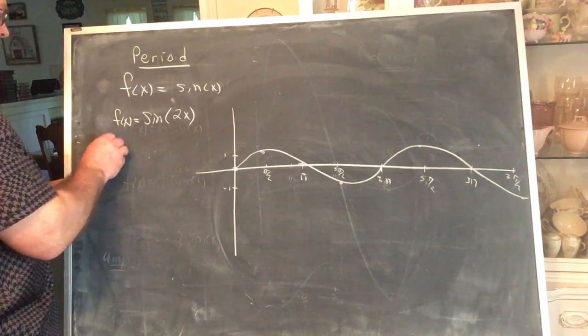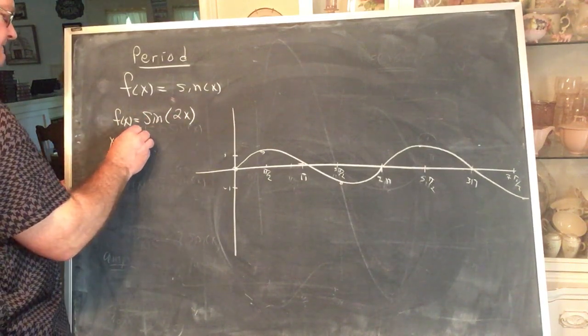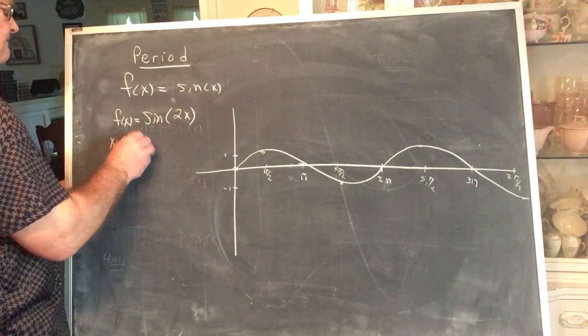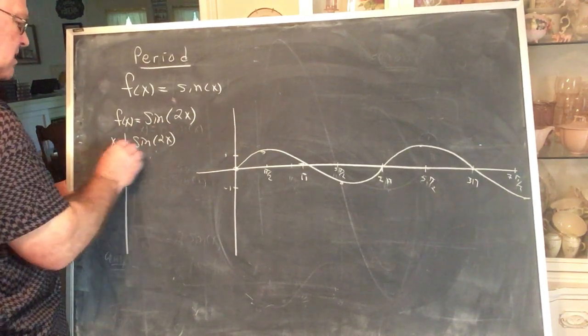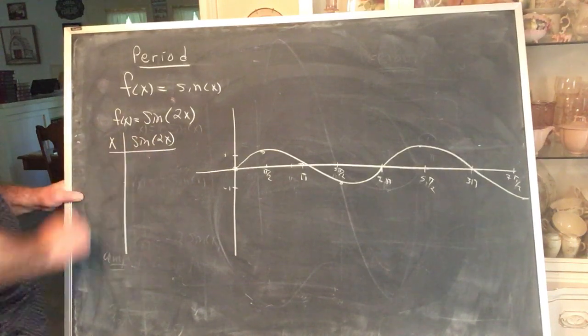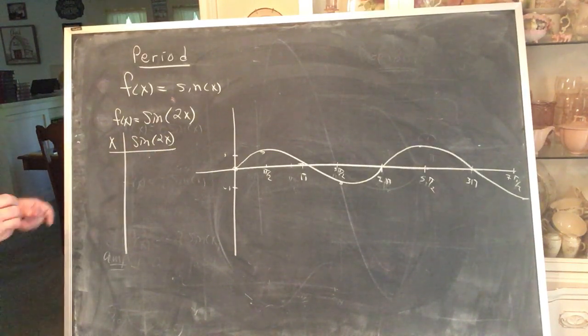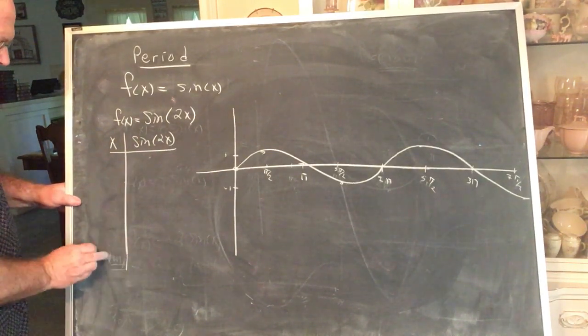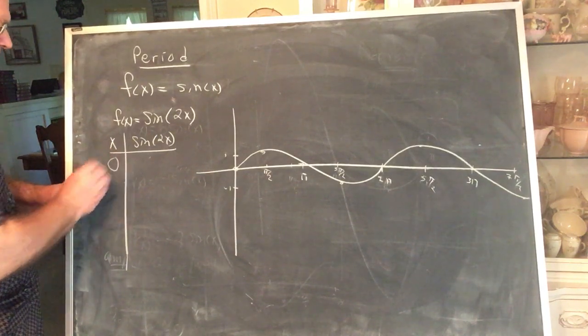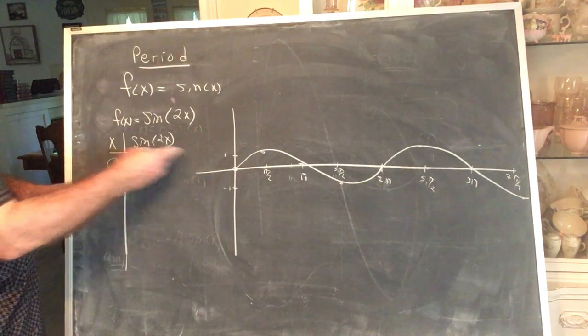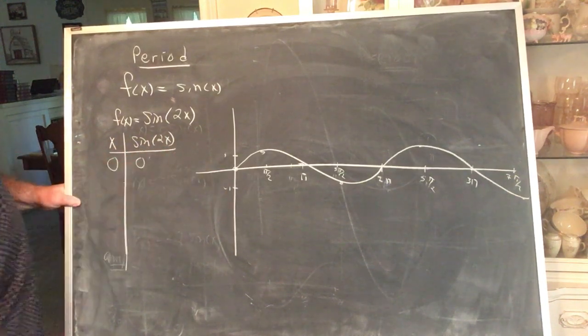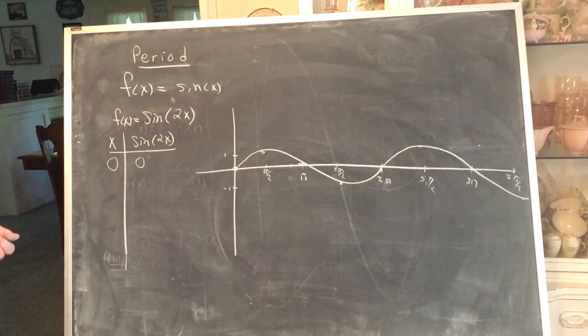Alright? So let's plot a few points and see if we can figure what this looks like. Remember, what this means is, first you double the x, and then you do the computation. And I'm going to sort of guide you along, since we're sort of working against the clock. If x is 0, this is straightforward. 2 times 0 is 0, and sine of 0 is 0. So this still passes through the origin.